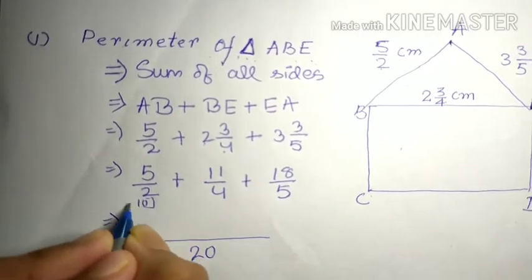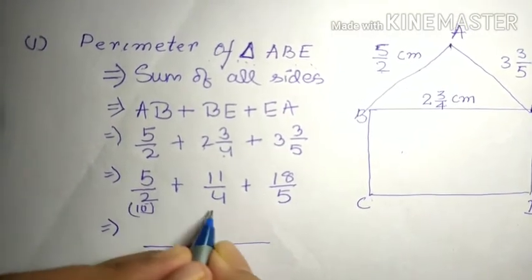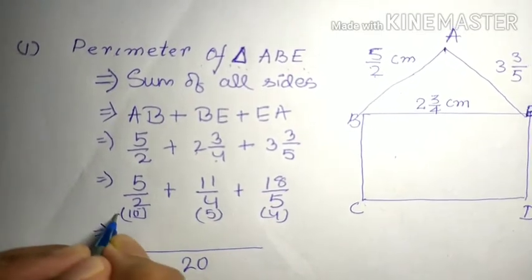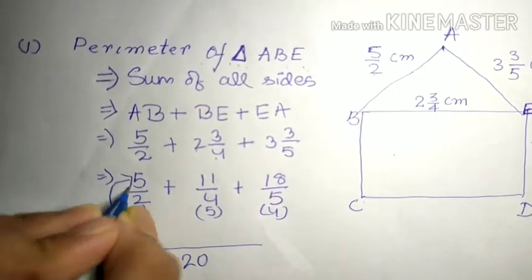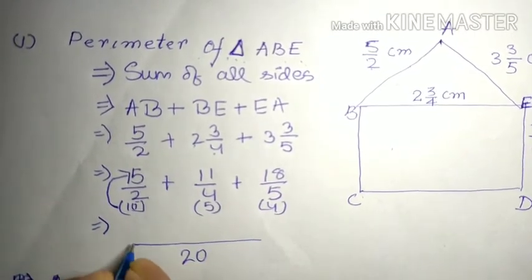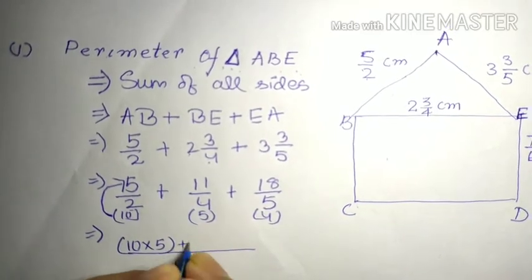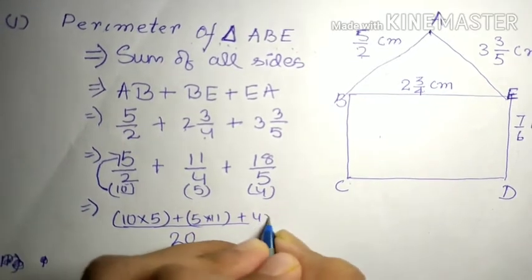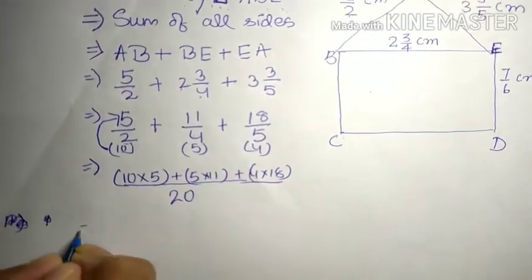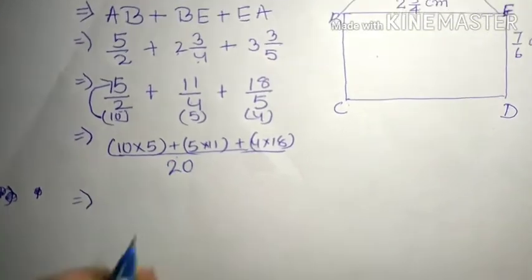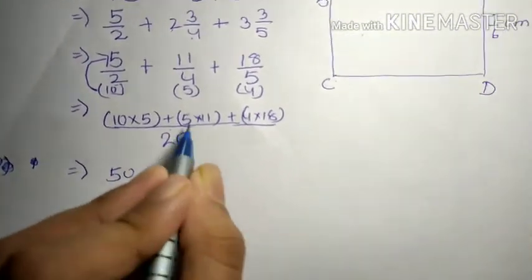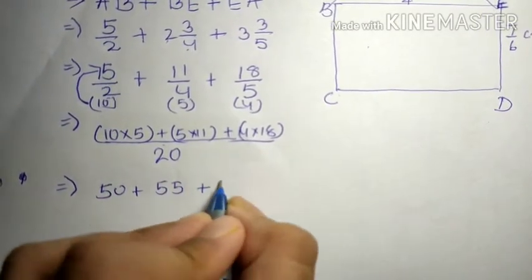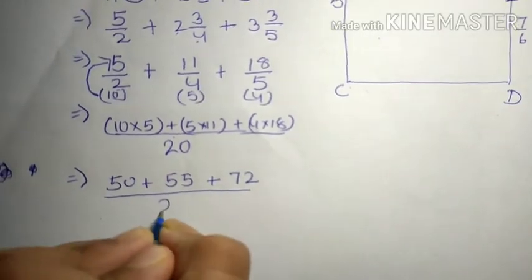In the 2 times table, 20 comes 10 times. In the 4 times table, 20 comes 5 times. And in the 5 times table, 20 comes 4 times. We multiply these bracket numbers with the respective numerators: 10 × 5 + 5 × 11 + 4 × 18, all over 20. So: 10 × 5 = 50, 5 × 11 = 55, and 4 × 18 = 72, all over 20.